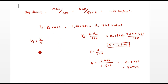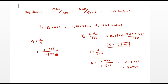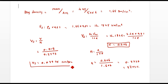Now we can substitute all the values. Seepage velocity Vs = V / N = 0.015 / 0.3773. From that we get the value 0.03975 cm/s. This is the seepage velocity.